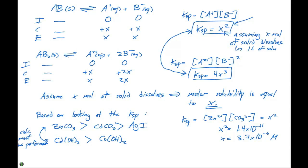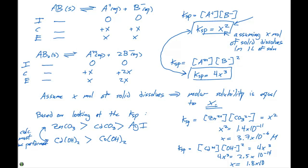With practice on these ICE tables, you'll recognize shortcuts: a 1:1 cation to anion ratio gives KSP = x², and a 1:2 ratio gives KSP = 4x³. For cadmium hydroxide: KSP = [Cd²⁺][OH⁻]² = 4x³ = 2.5×10⁻¹⁴, which gives x = 1.8×10⁻⁵ M.